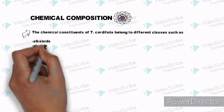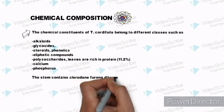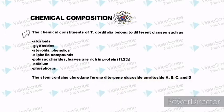The chemical constituents of T. cordifolia belong to different classes such as alkaloids, glycosides, steroids, phenolics, aliphatic compounds, polysaccharides, and its leaves are rich in protein which is 11.2% calcium, phosphorus.